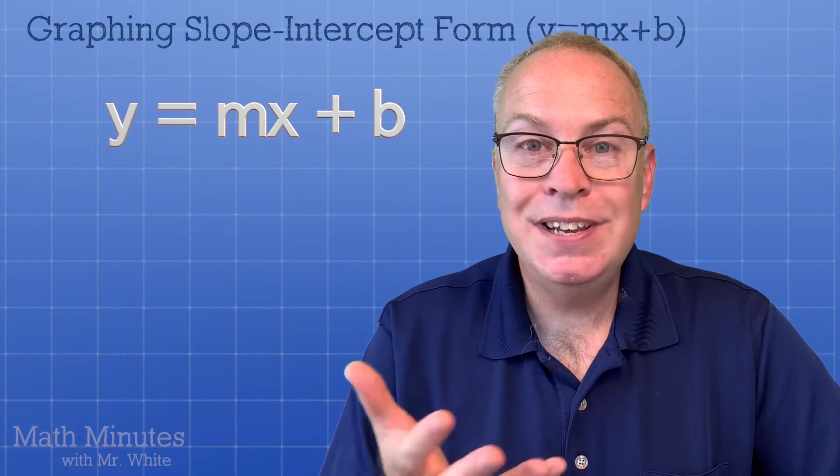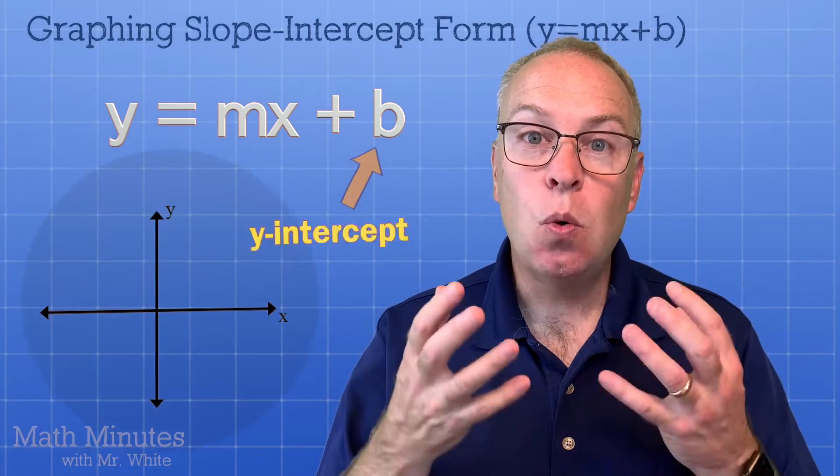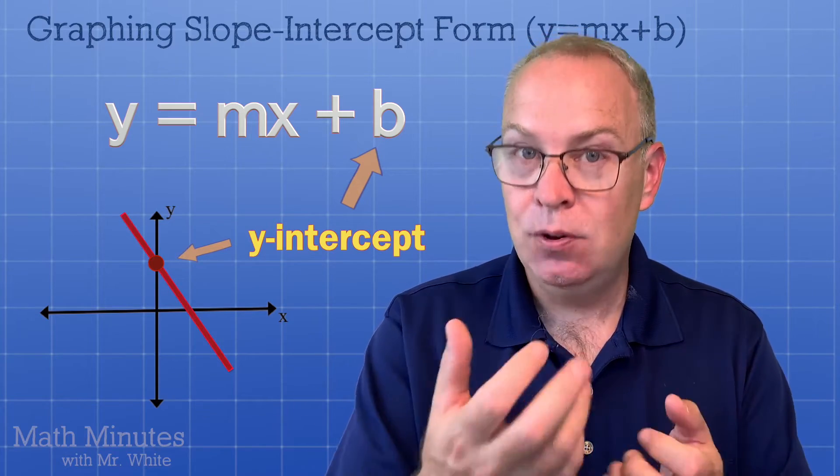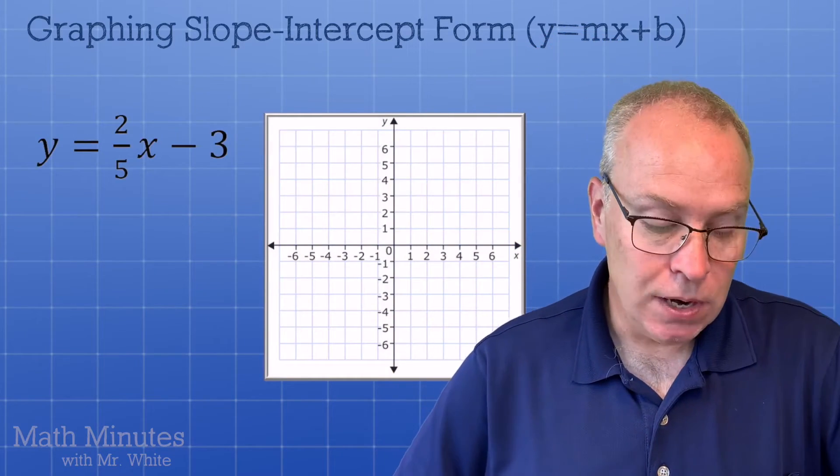And then what is that b thing? That's the y-intercept. That's where the line hits the y-axis. So I like to think of that as a freebie point that we can just get right out of that equation and get a dot on our graph. Okay, let's look at an actual example here.